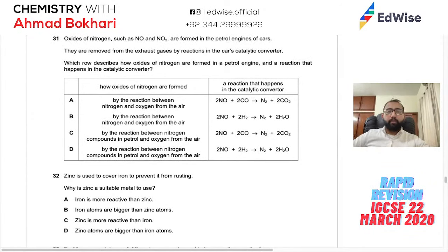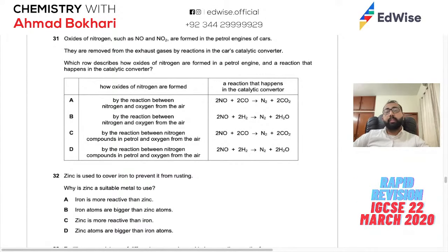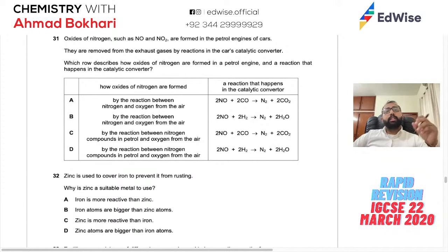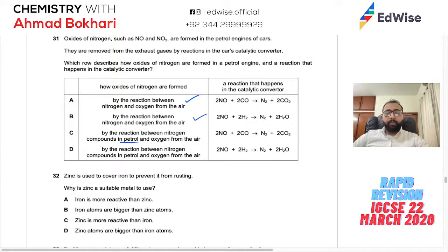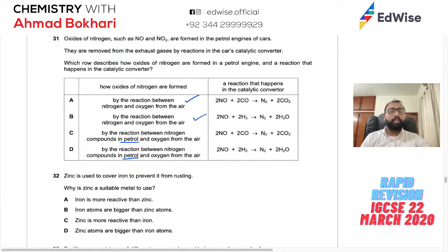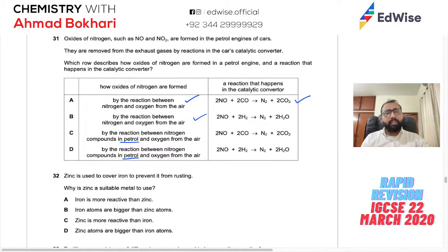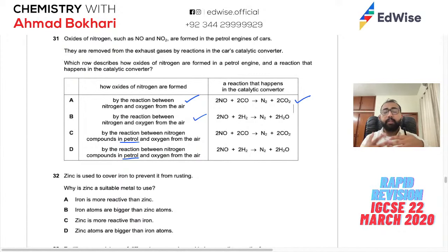Question 32: Oxides of nitrogen such as NO and NO2 are formed in petrol engines because nitrogen and oxygen from the air react at the high temperatures inside engines — they do not come from the petrol itself. They are removed by catalytic converters, which convert CO and NO into N2 and CO2. The correct description is: reaction of nitrogen and oxygen from the air at high temperature. The statement mentioning hydrocarbons is wrong — it's nitrogen and oxygen from air, not from fuel.